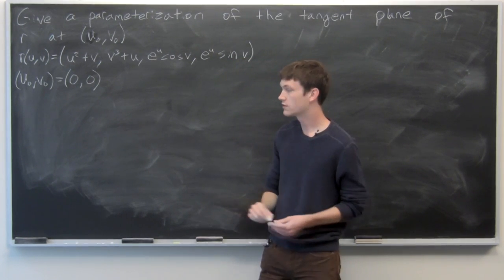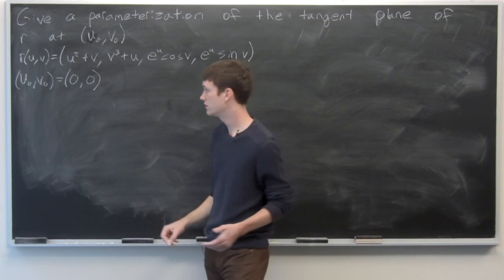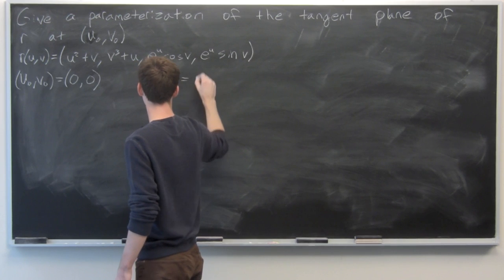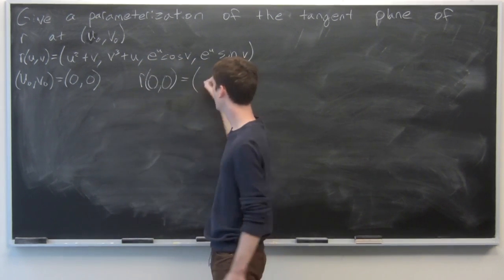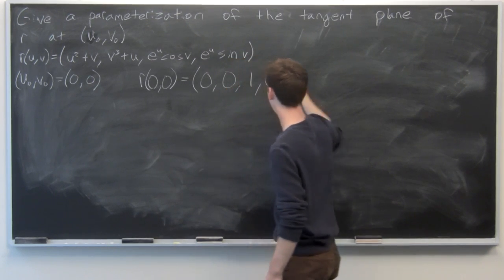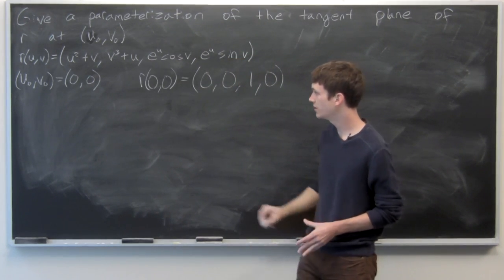First, let's take r(0,0) = (0, 0, 1, 0). This is our point.